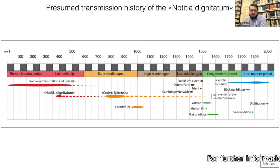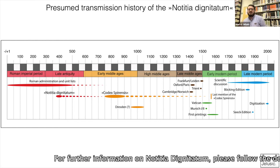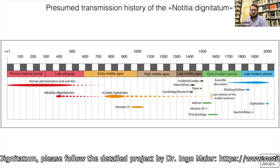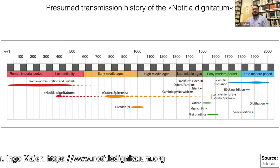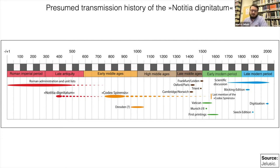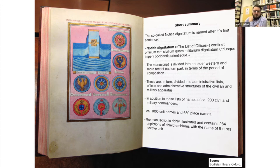The presumed transmission history is one of the most important things to keep in mind when working with the copies we still have in university and state libraries today. Even if we had the Carolingian copy from the Codex Spirensis, we are no longer dealing with the original late Roman state handbook. We are working only with late medieval and early modern copies — a really important fact which quite a lot of people do not understand. Please keep it in mind until the end of the lecture.